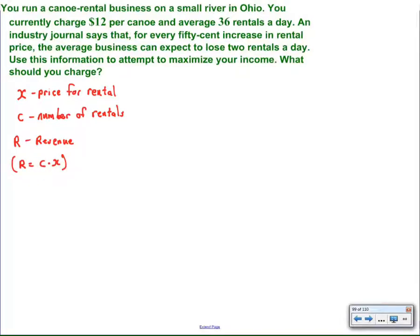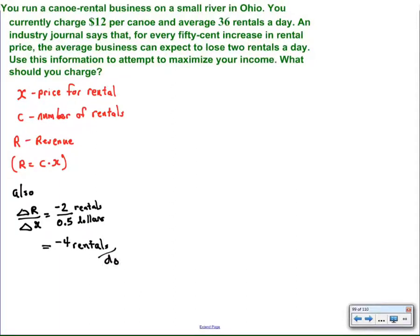Before we continue, we're going to look at that rate because it says we lose two rentals for every half dollar. We can use our arithmetic skills and simplify that to a four rental loss for every dollar. So instead of working with 50-cent increases, we'll work with dollar increases, but that means we're going to lose twice as many rentals every time we increase the price by a dollar. That's the only difference — the twist with the 50-cent change.